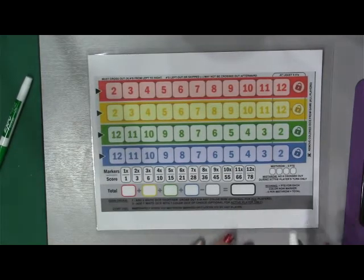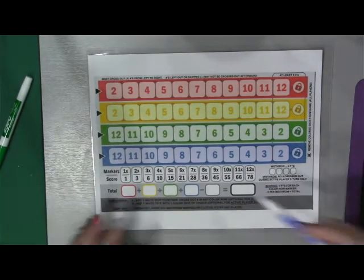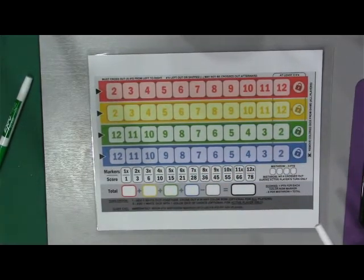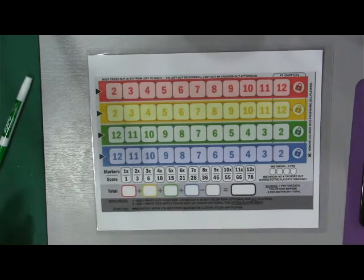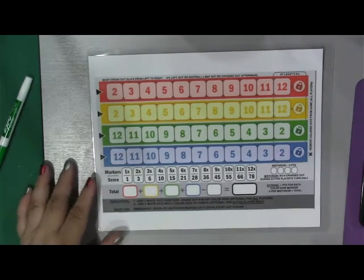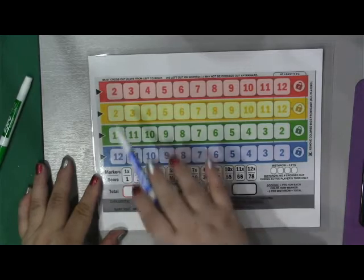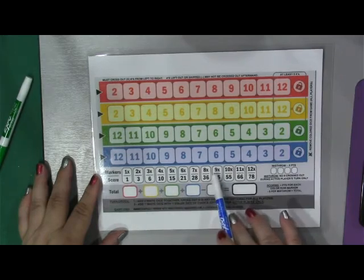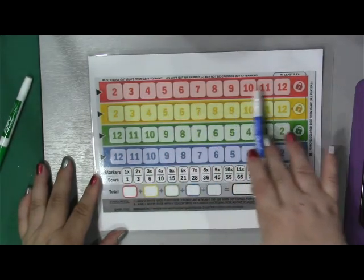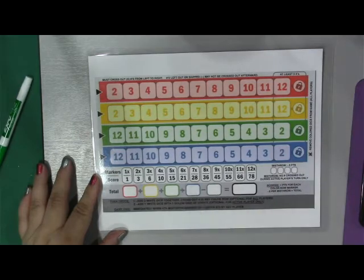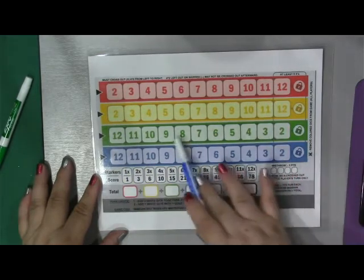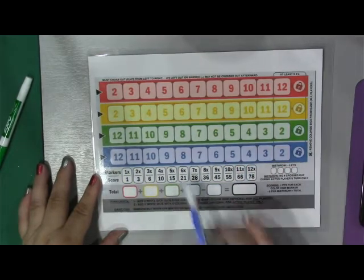We're going to be rolling dice and crossing out the numbers that we create within each of the columns depending on the color and the choices that we make. At the end, when the game is triggered, depending upon how many numbers you've crossed out, you will get points. If you cross out six numbers throughout the course of the game, you will get 21 points. If you crossed out four numbers, you would get 10 points.